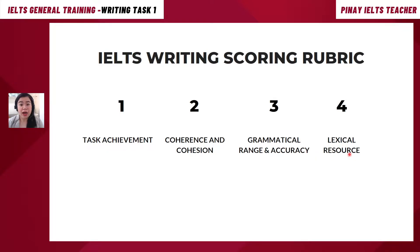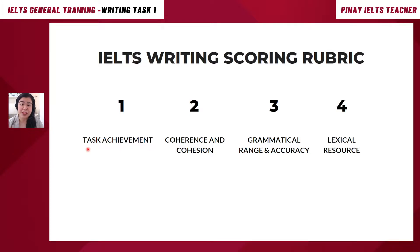I will be uploading another video that goes into detail about these different scoring rubrics. But for now, Task Achievement — as the words imply — is checking that you were able to answer all that is being asked in that letter. You're given a task card, and you have to write everything they asked you to write. Also, they always give you a minimum number of words, so you have to reach that minimum to avoid a low score on Task Achievement.